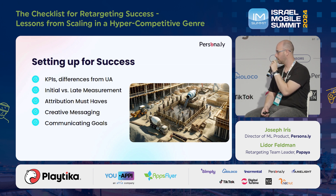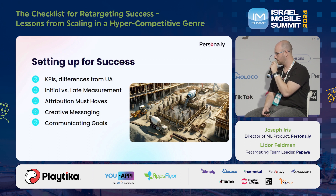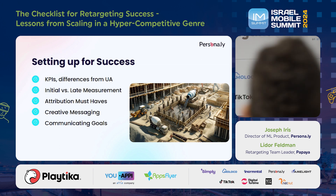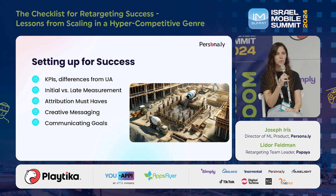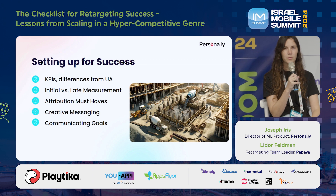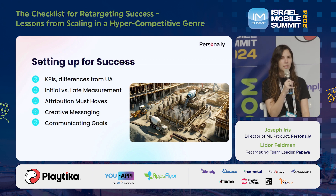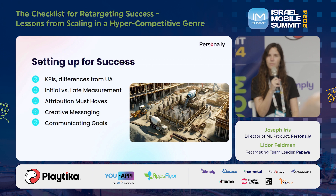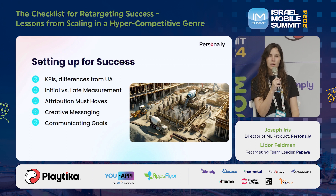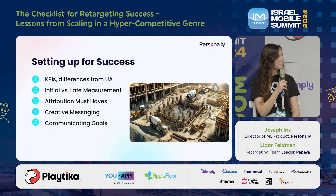We need to start talking about the foundation. First, as we said, about any marketing activities: measurement, KPIs. There are inherent differences between UA and retargeting. When you start a retargeting activity, it's a separate activity from UA and you need to define it with separate measurement and metrics. Work with your analytics department and the right MMP to set up tracking links or deep links.